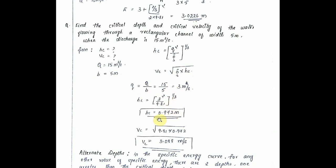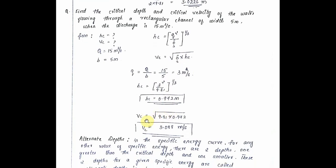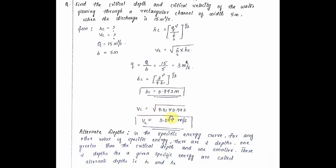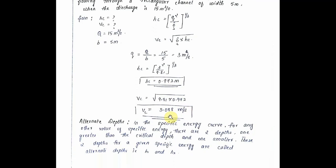That is equal to 0.972 meters. And vc equals approximately 3.088 meters per second.